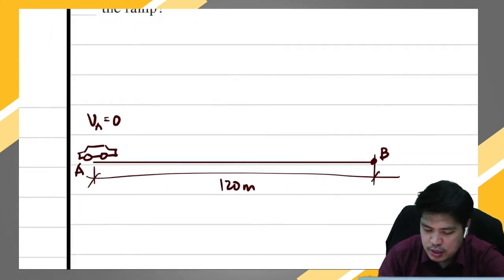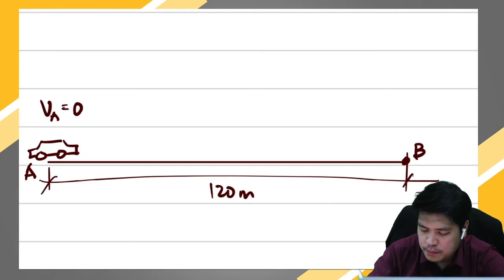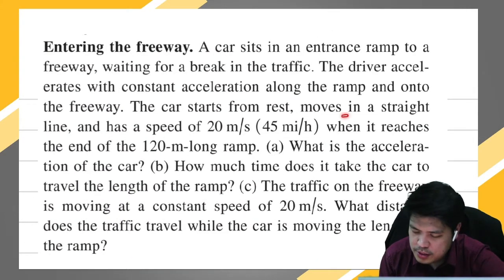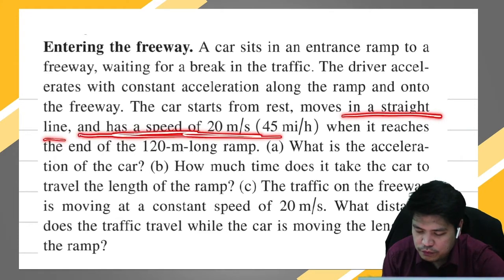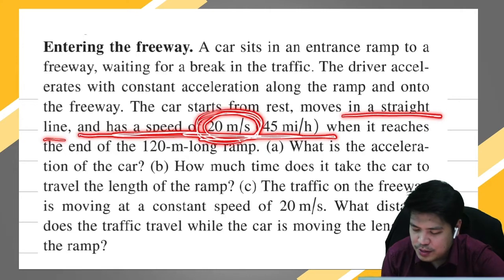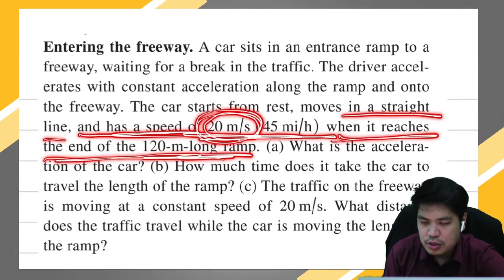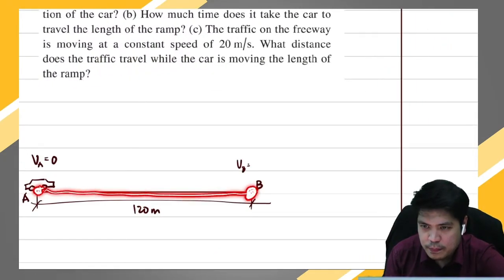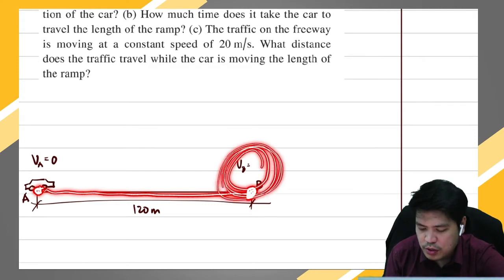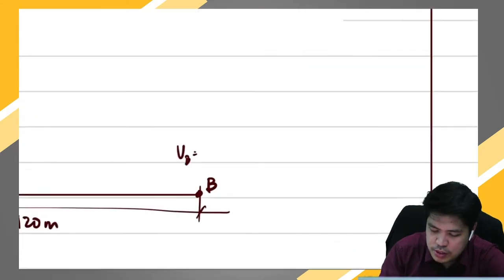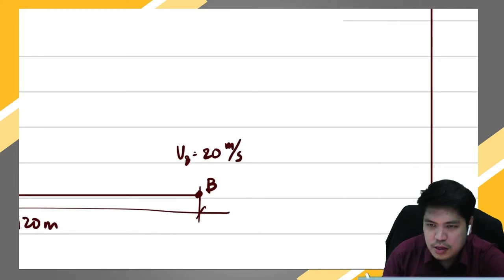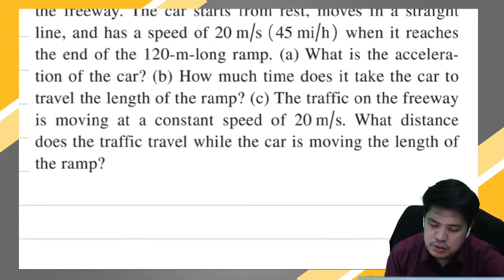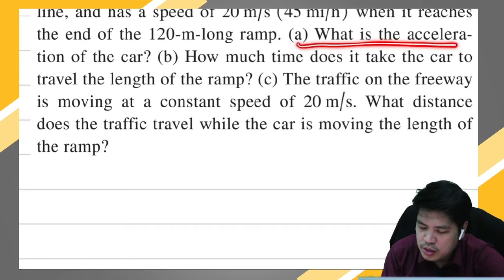As it reaches point B, what is the velocity? The problem states: the car starts from rest in a straight line and has a speed of 20 meters per second when it reaches the end of the 120-meter long ramp. So from rest, as it reaches the 120-meter stretch, the velocity at point B is 20 meters per second.